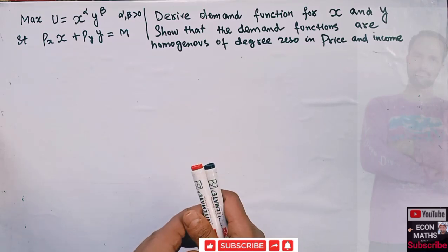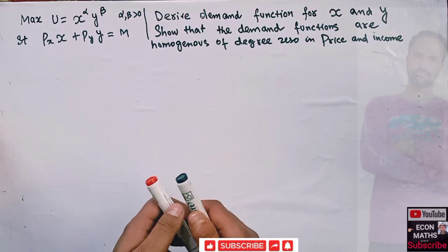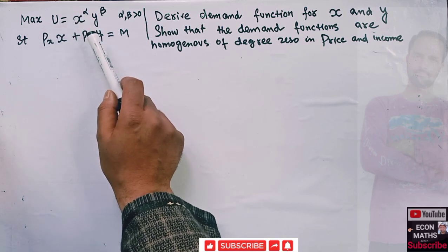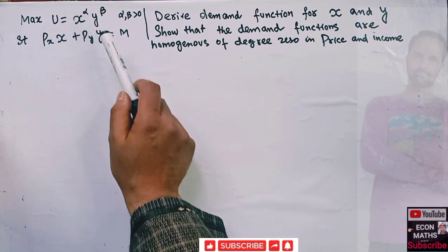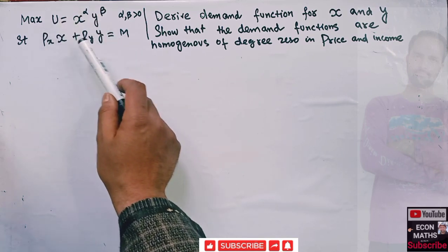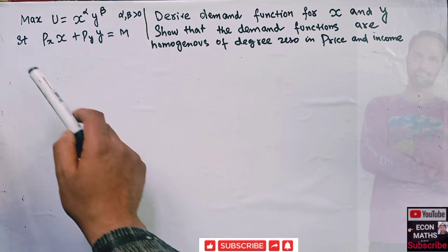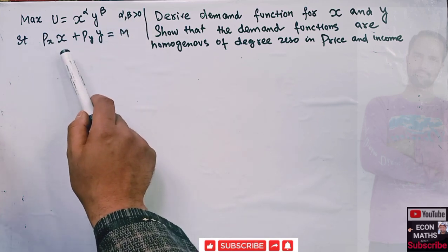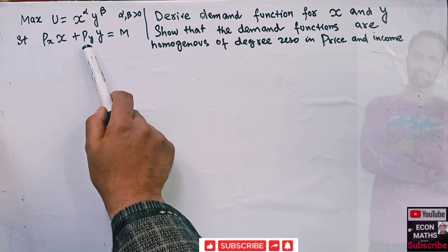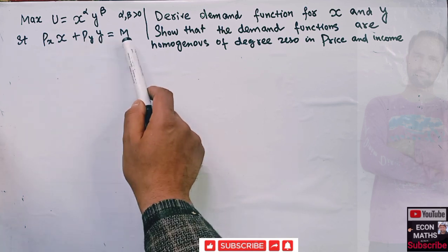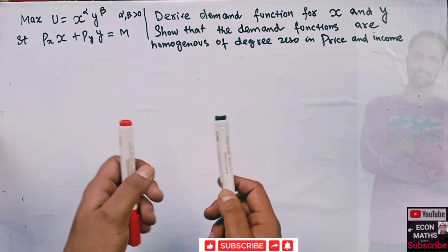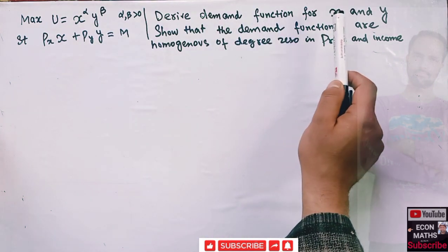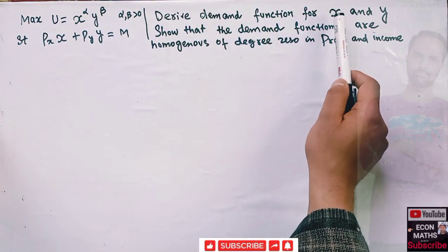Let us solve a question on degree of homogeneity. The question is: maximize utility U = x^α * y^β. This is our utility function where α and β are greater than zero, subject to the budget constraint: price of good x times units of good x plus price of good y times units of y equals m, where m is the budget of the consumer. We have to derive the demand functions for good x and y.